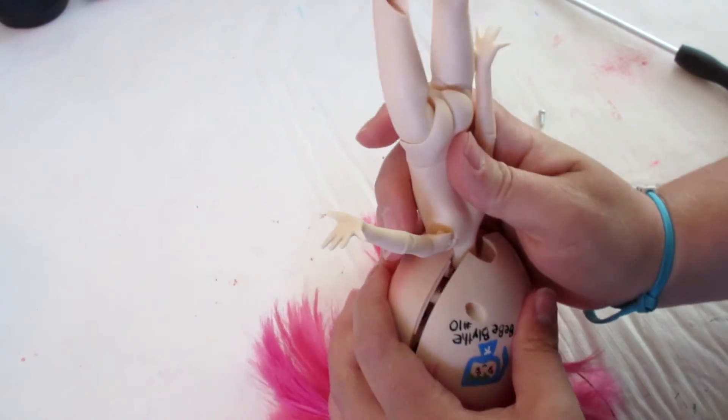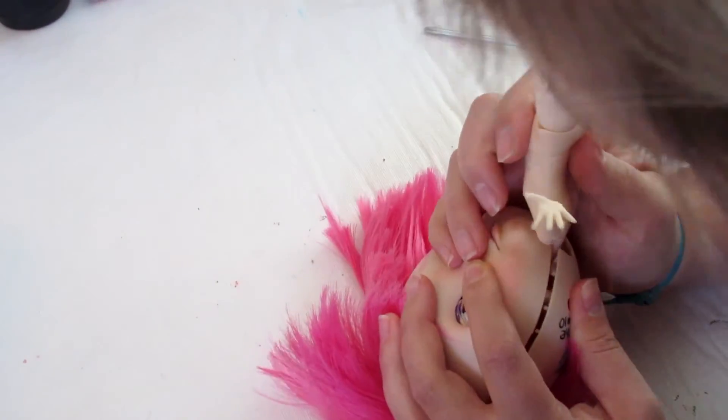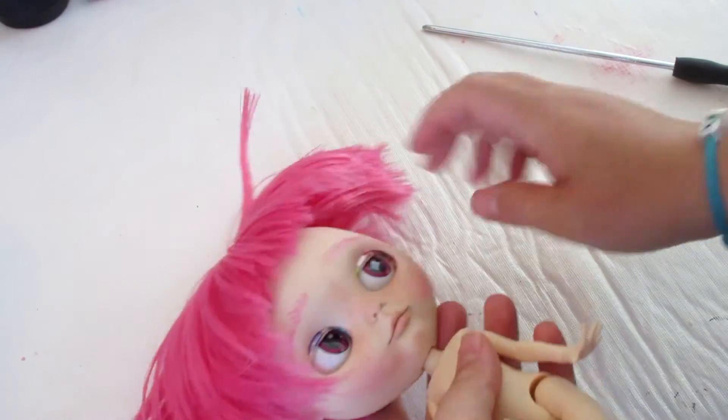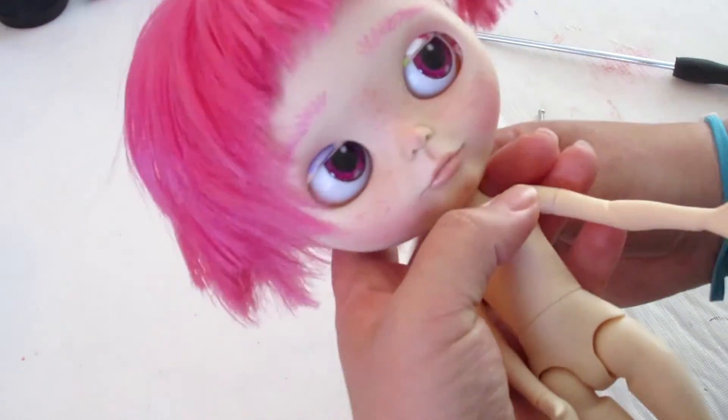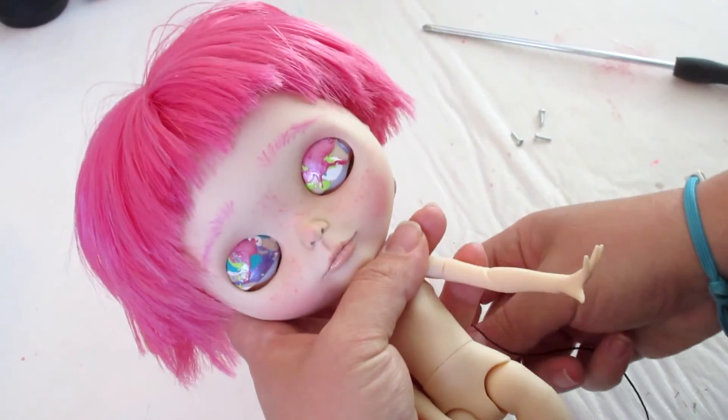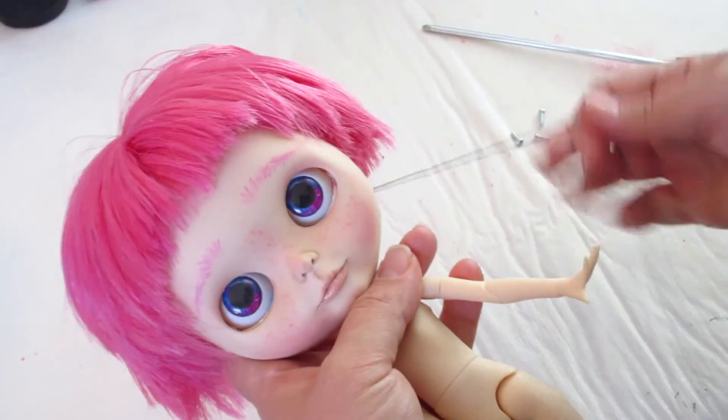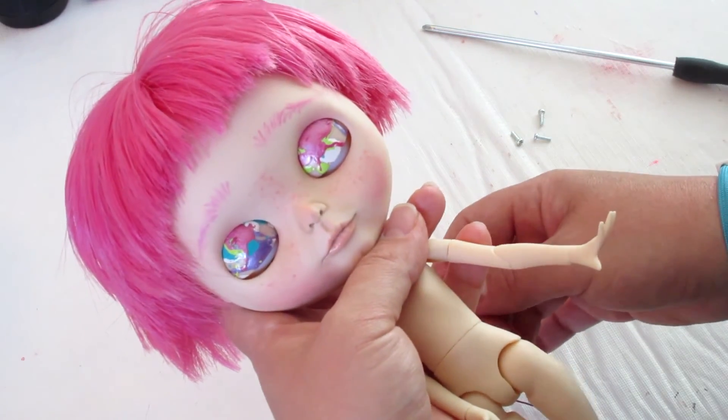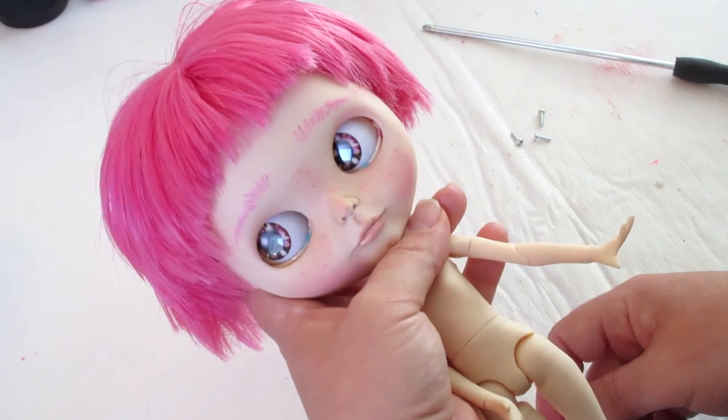She snapped together. Let's pull our strings - she has sleep eyes and they open. So you pull the one string, closes her eyes and changes them. Pull the other string to open them.